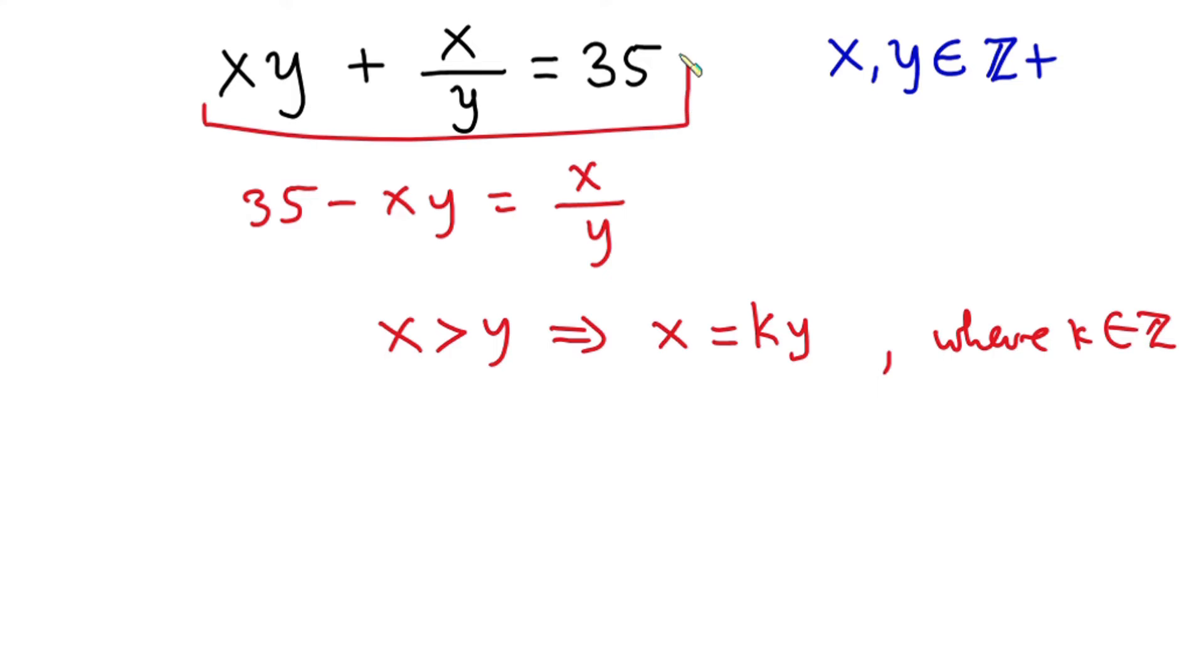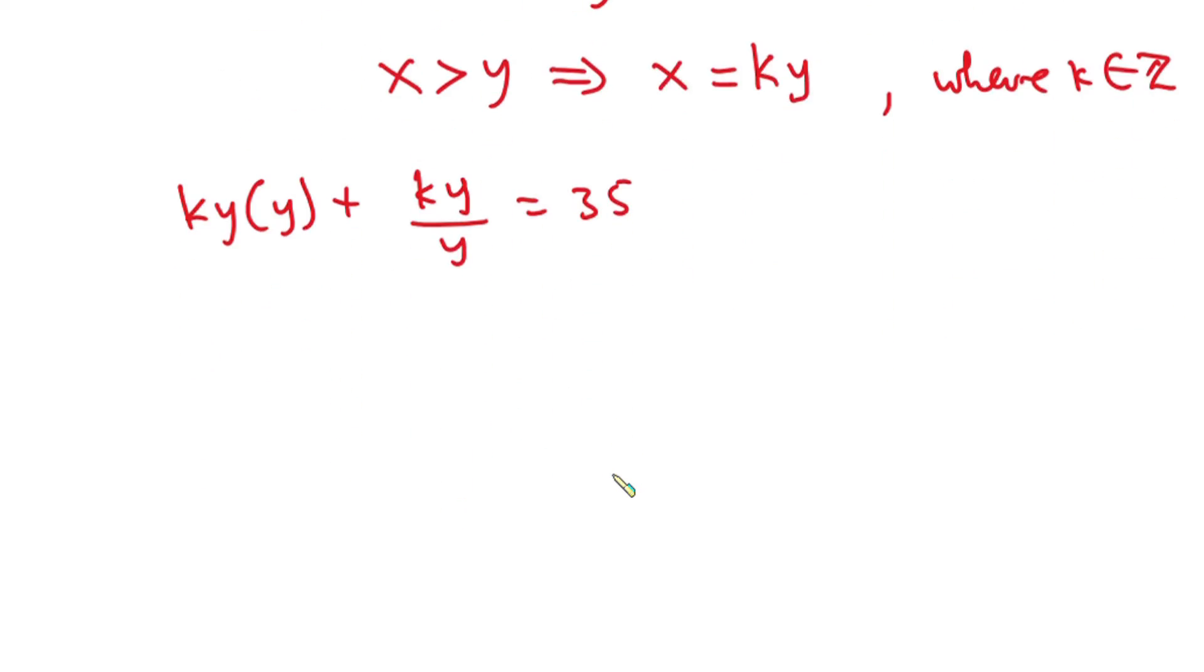So this original equation now becomes ky times y plus ky divided by y equals 35. Now let's go ahead and simplify this.